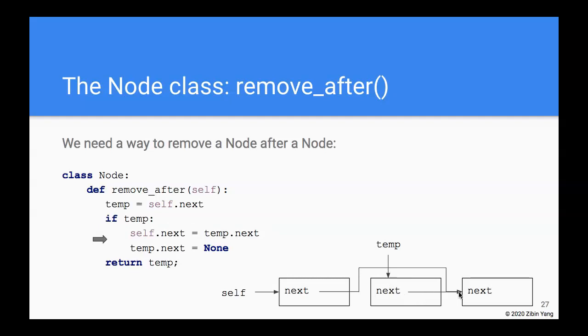So self.next now is pointing to temp.next, or they're pointing to the same node. And then the next thing it's going to do is set temp.next to None, so it's pointing to nothing now. And then finally what it returns is temp. So the remove_after method has now removed the node after the node self from the linked list.